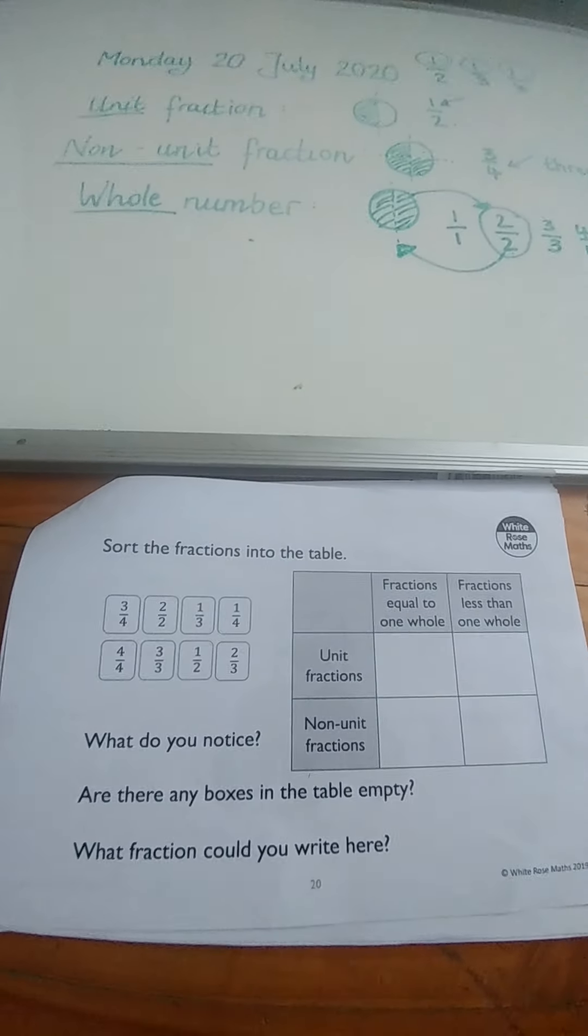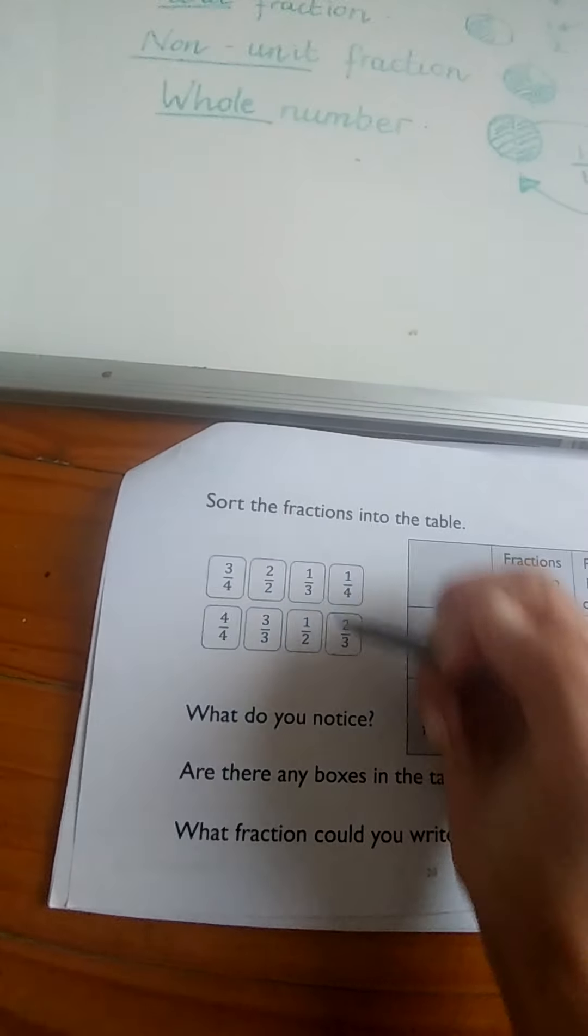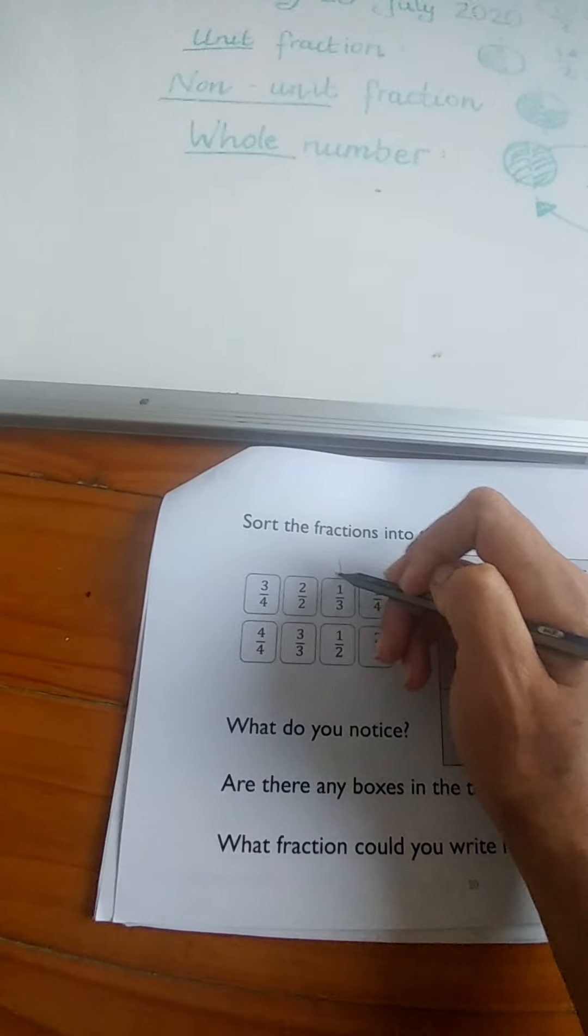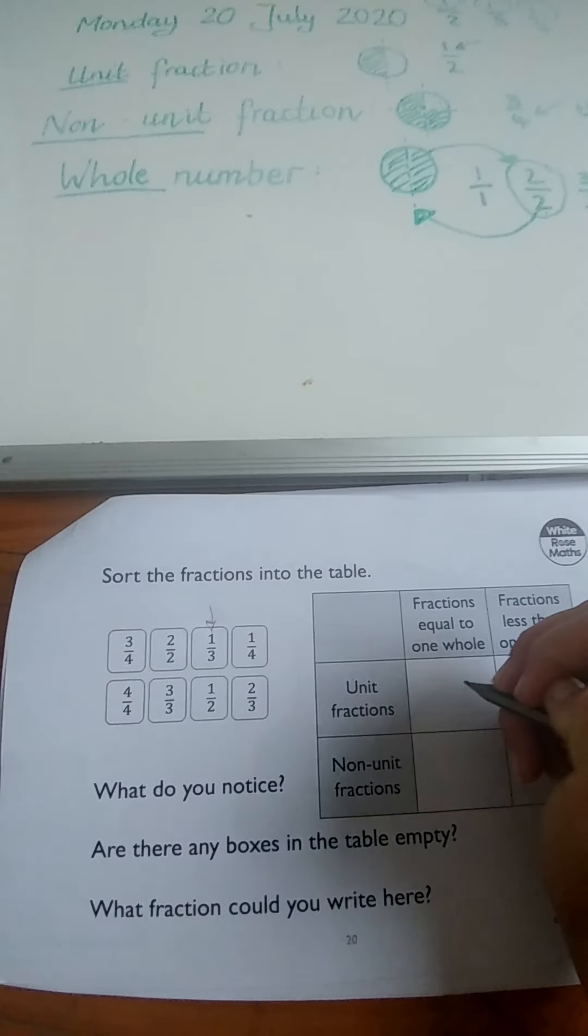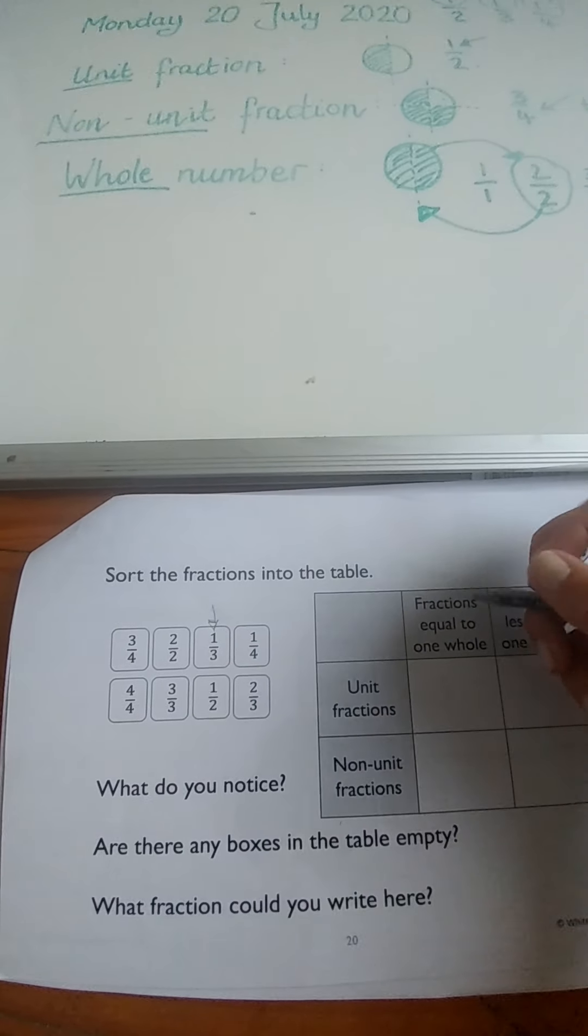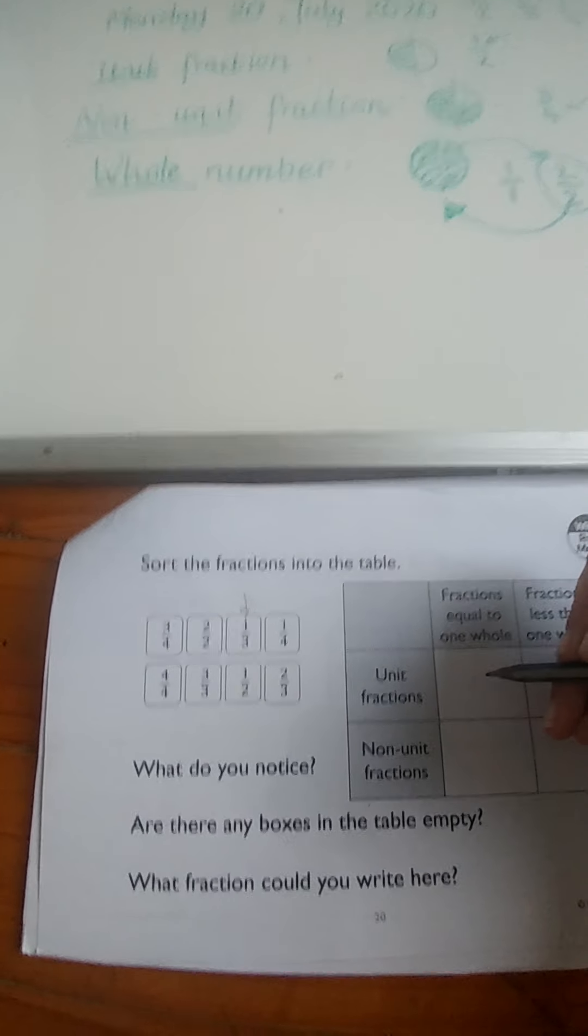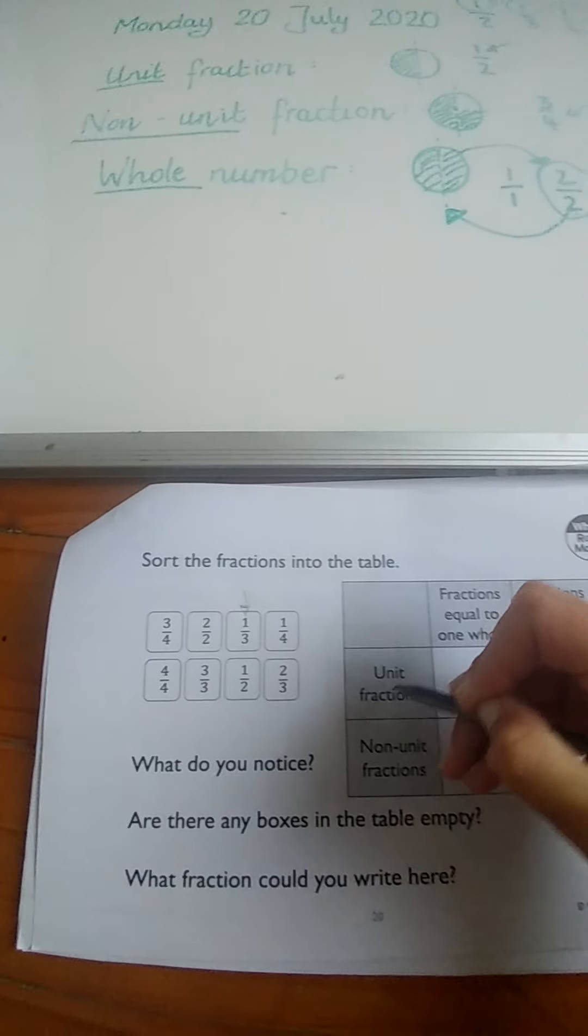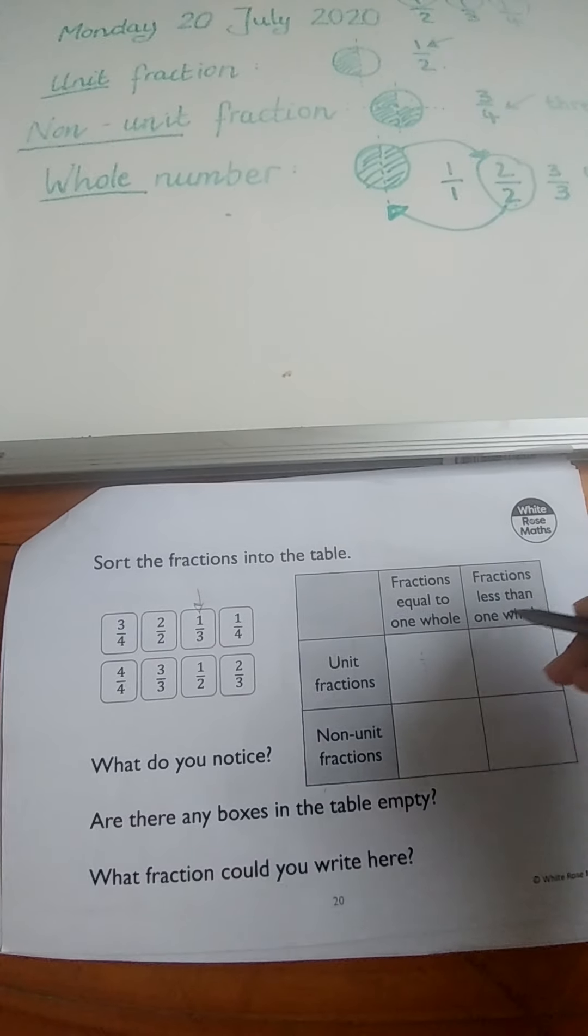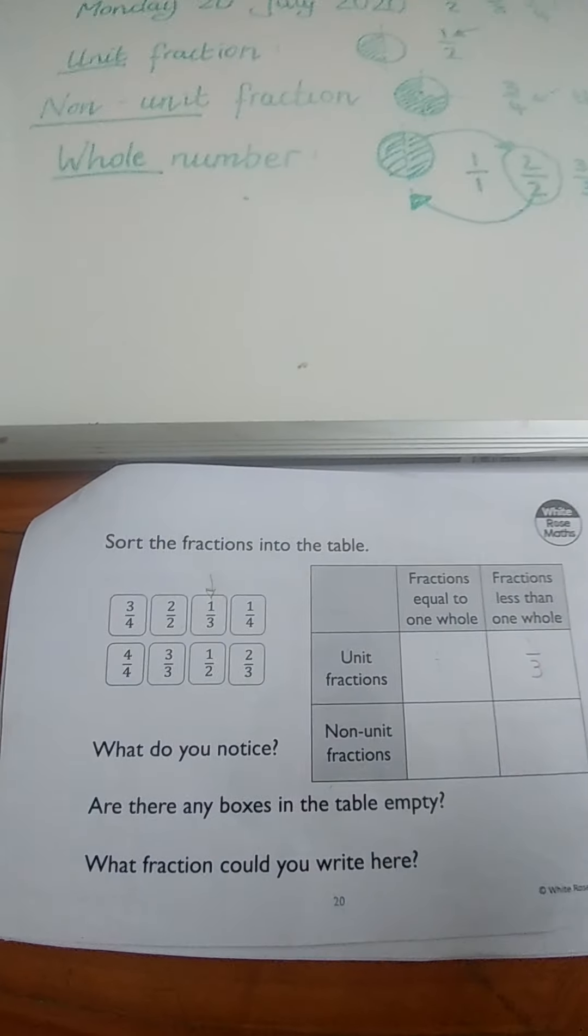So our boxes, we're going to look here first and I'm going to do the first one for you. Unit fractions. What were unit fractions? Unit fractions are anything with a one at the top. So where's our first one? Here, one-third. So one-third is a unit fraction. So would I write it here? Let's see, is it here a fraction that's equal to a whole? Is one-third equal to a whole? No. So it is a unit fraction but it's a fraction less than one whole. So one-third would go here.